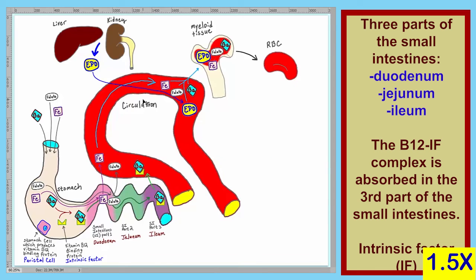Let's summarize what we have so far. When we eat food, we intake vitamin B12, folate, and iron, which enter our stomach. The folate travels to the first or second part of the small intestine — the duodenum or the jejunum — and is absorbed into circulation. The iron travels to the first part of the small intestine, the duodenum, and is absorbed into circulation. The vitamin B12 enters the stomach, binds to intrinsic factor, which is produced by the parietal cells of the stomach, and this complex travels to the third part of the small intestine.